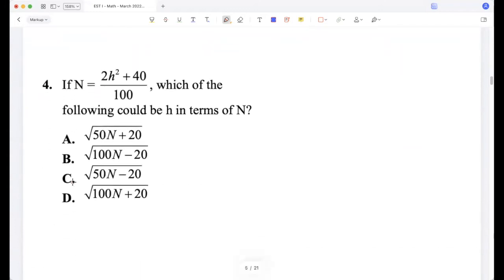If n is this, which of the following could be h in terms of n? So n is (2h² + 40)/100, which is (h² + 20)/50. So 50n is h² plus 20, so h² is 50n minus 20.